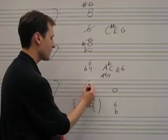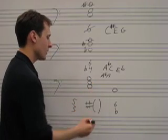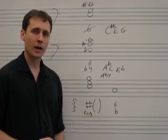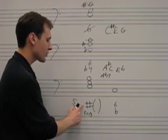If we write E, G, and B, then what we've written is an E minor chord. Now, because of this sharp, though, it affects the 3rd of the chord.